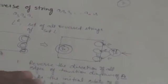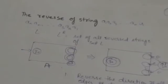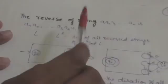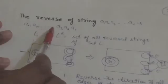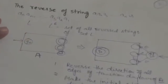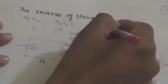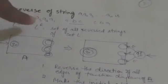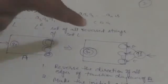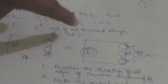Next is the reverse of a string. Suppose there is a string a1, a2, a3 up to an — then the reverse of this string would be an, an-1, an-2, up to a3, a2, a1. So if there is a string ABC, then its reverse will be CBA.